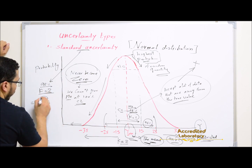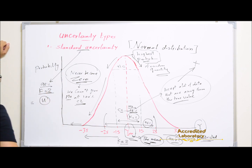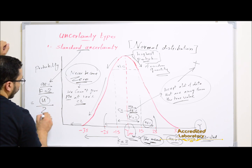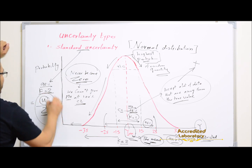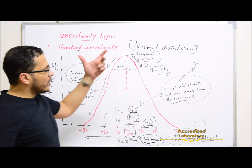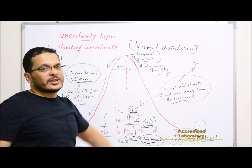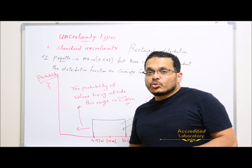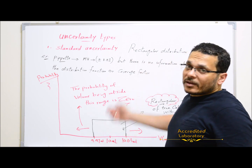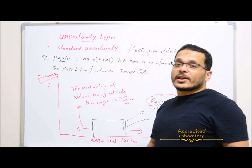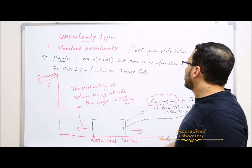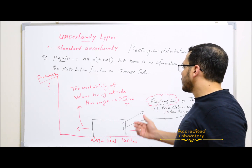You can assume that uncertainty coming from calibration certificates, like for balances or micropipettes, is normally distributed. In this case you calculate the standard uncertainty at 95% confidence level, which means coverage factor k equals 2, by dividing the uncertainty from the calibration certificate by 2. This gives you the standard uncertainty using the normal distribution.